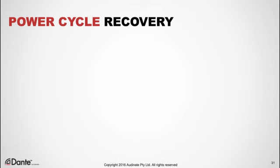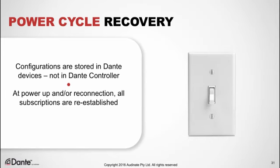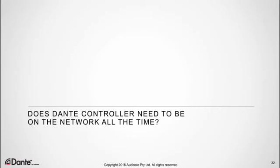What happens when we disconnect or power down devices, or if the power goes out? Fortunately, in Dante, configurations are stored in the devices themselves — not in Dante Controller. When we unplug or power down devices they disappear from Dante Controller, but when we power them back up or reconnect them, they reappear and all subscriptions are immediately re-established. We don't even need Dante Controller on the network for this. Dante Controller only needs to be running when you wish to make a change.